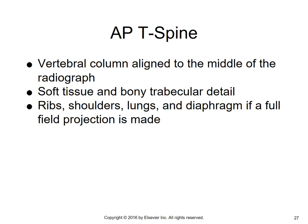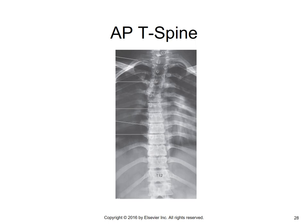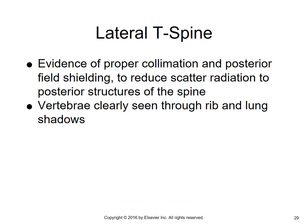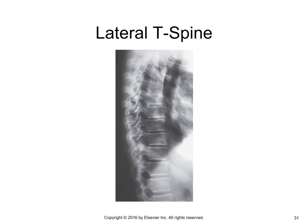In some institutions they want to see almost a full chest for the AP. Here's an image of the AP T-spine — you can see C7 at the top because there's no rib attached to it, then all other vertebrae with rib attachments. For the lateral T-spine criteria: evidence of proper collimation, posterior lead shielding to reduce scatter, vertebrae clearly seen through rib and lung shadows, disc spaces visible between vertebrae, and the whole shape of the vertebrae demonstrated.